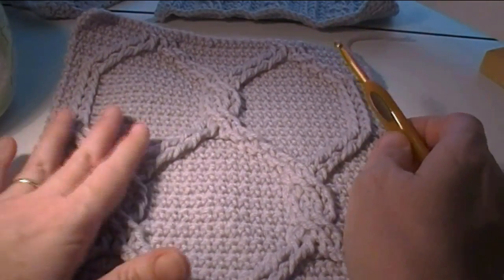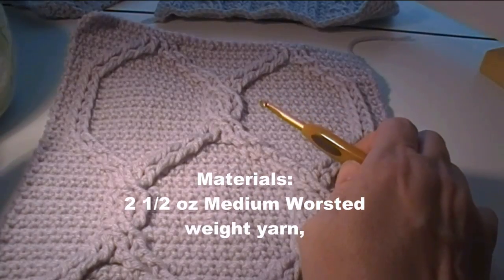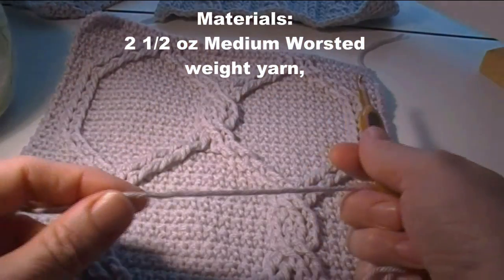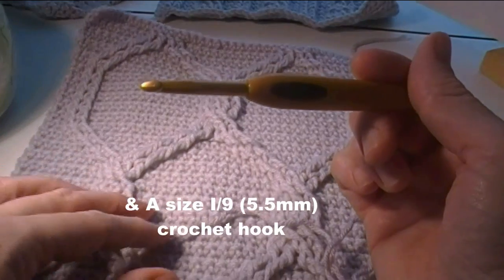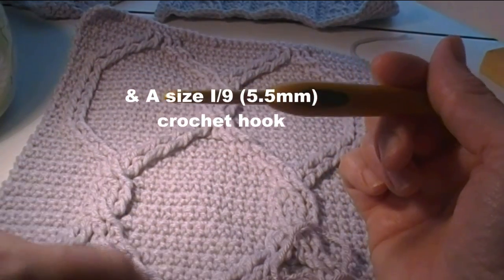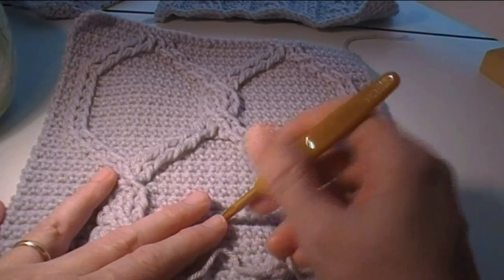What we're going to need to make this square is about two and a half ounces of medium worsted weight yarn, a size I-9 or 5.5 millimeter crochet hook in US terminology.